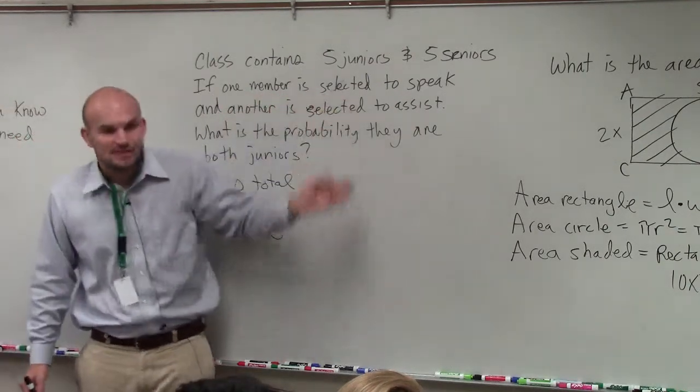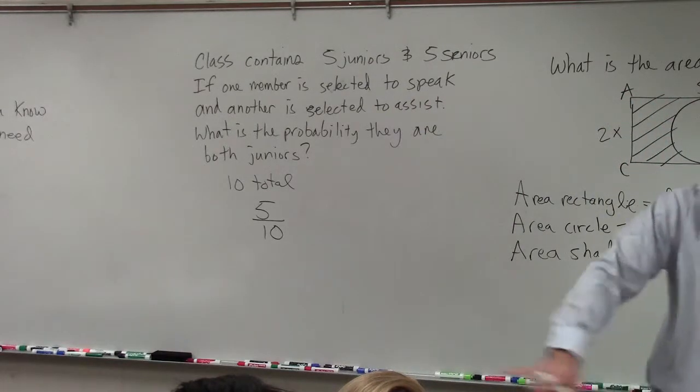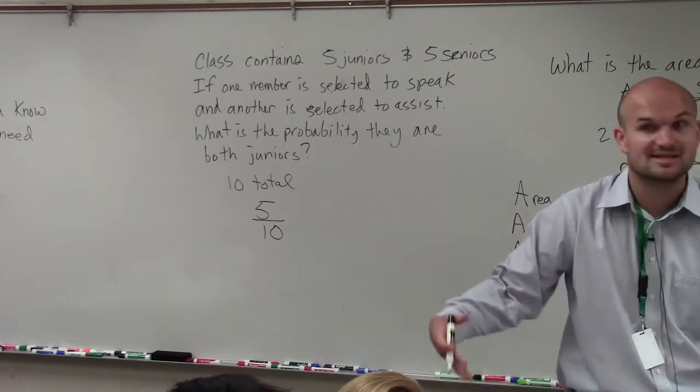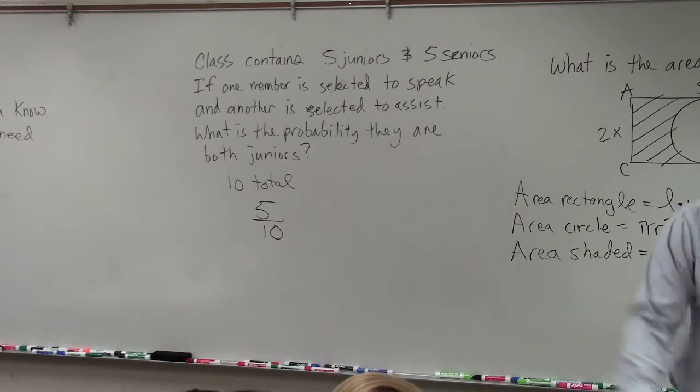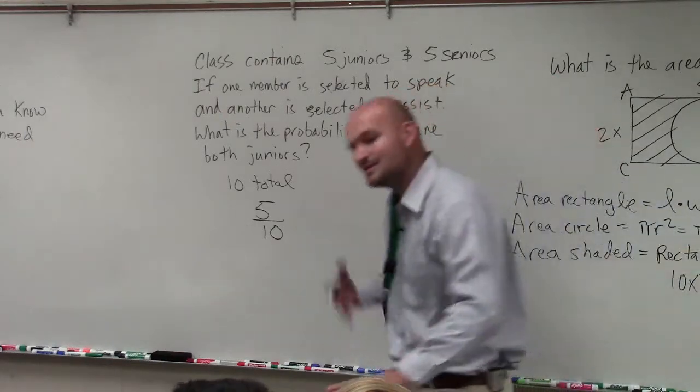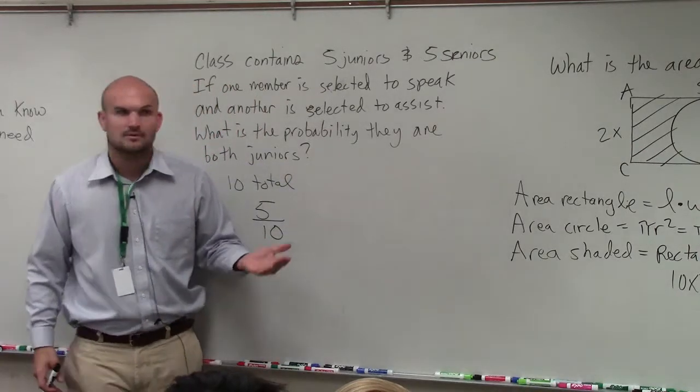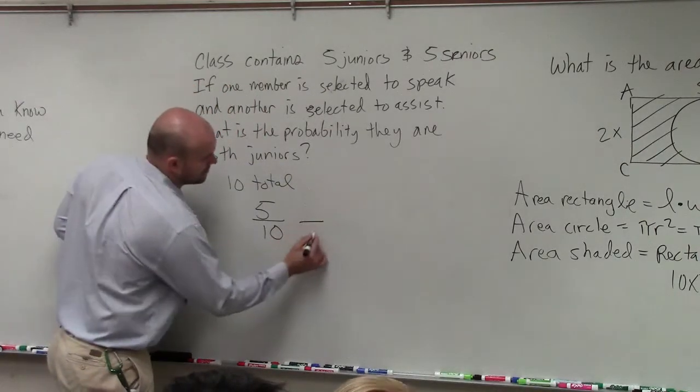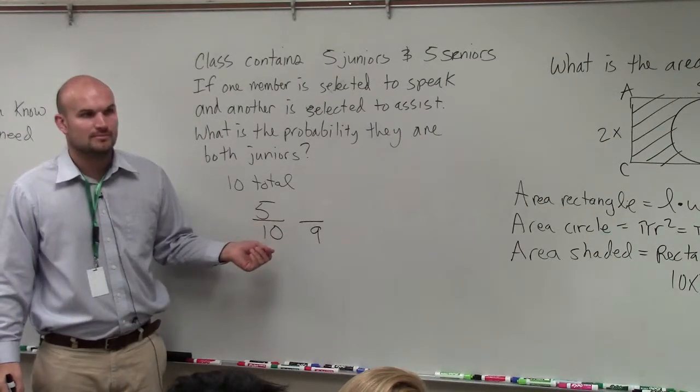Then I'm going to select another one. So I'm going to select you. What is the probability that she is also a junior? Well, I can't select her. I already selected her. So I'm going to select one more, correct? She's out of the pool. I've already selected her. So now, let's just say this. So I take her out of the pool, right? How many total students do I have now? Nine. And then how many juniors left over do I have to choose from? Four.